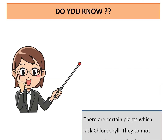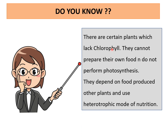There are certain plants which lack chlorophyll. They cannot prepare their own food and do not perform photosynthesis. They depend on food produced by other plants and use the heterotrophic mode of nutrition. In part 1, we discussed the autotrophic mode of nutrition, and now we will see how plants show heterotrophic mode of nutrition and what the different plants are that show this type of nutrition.